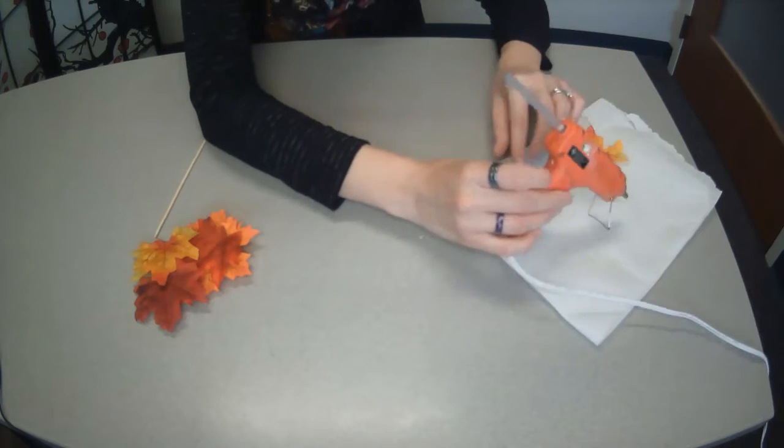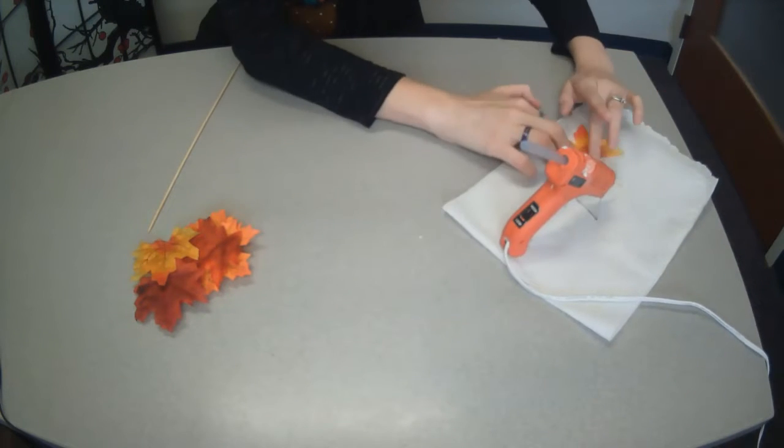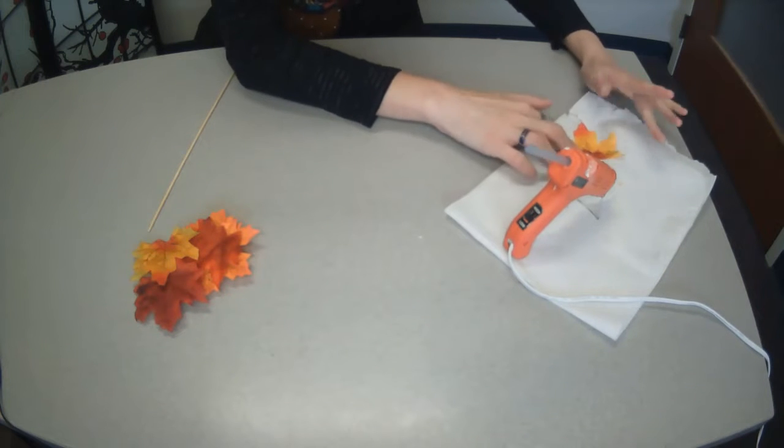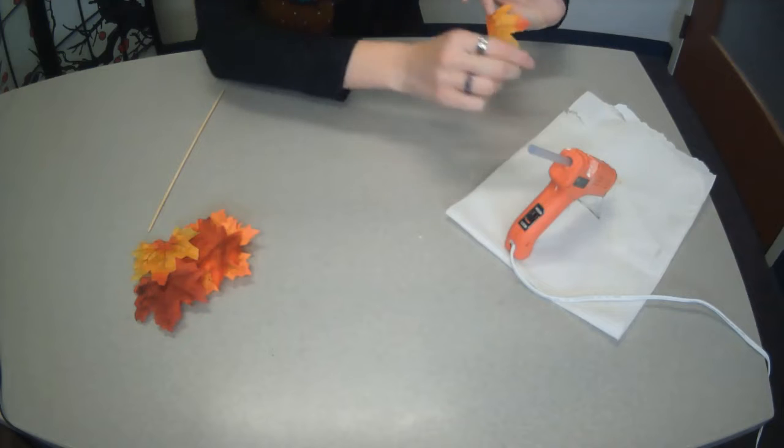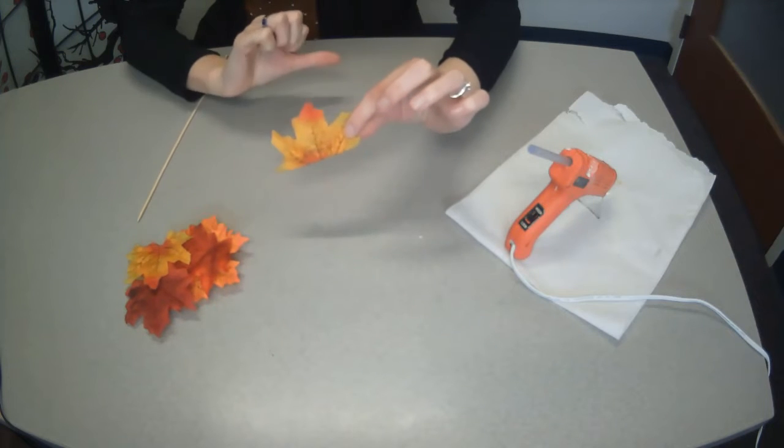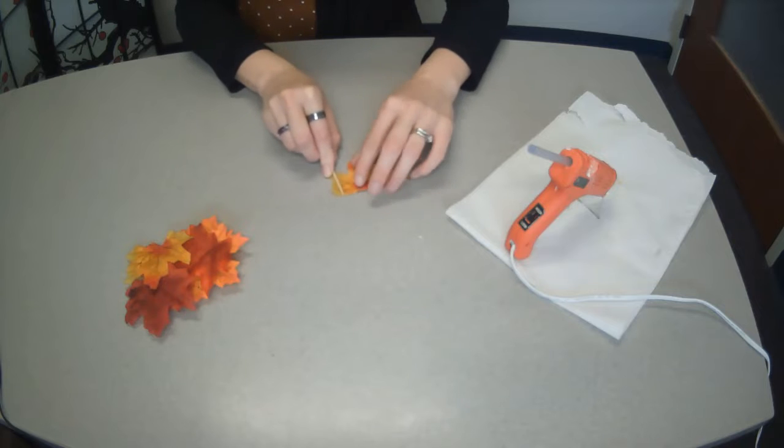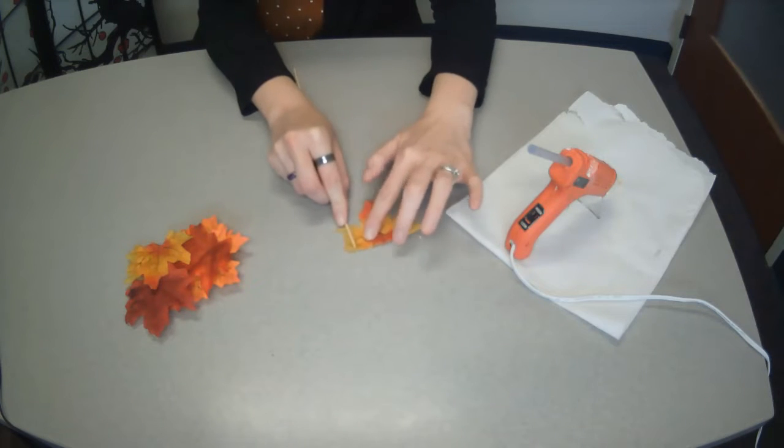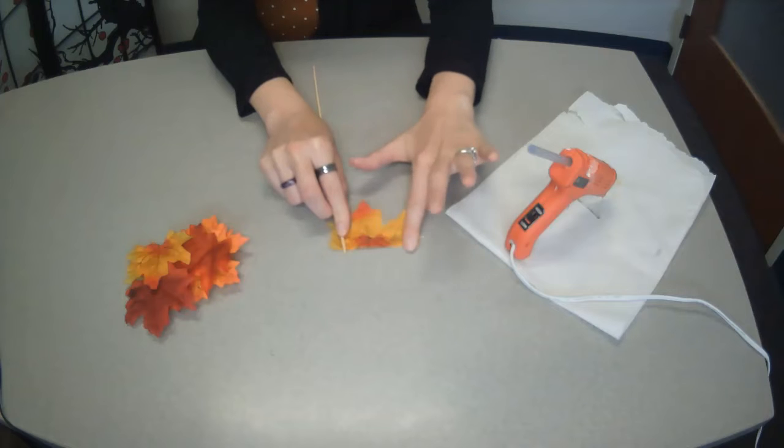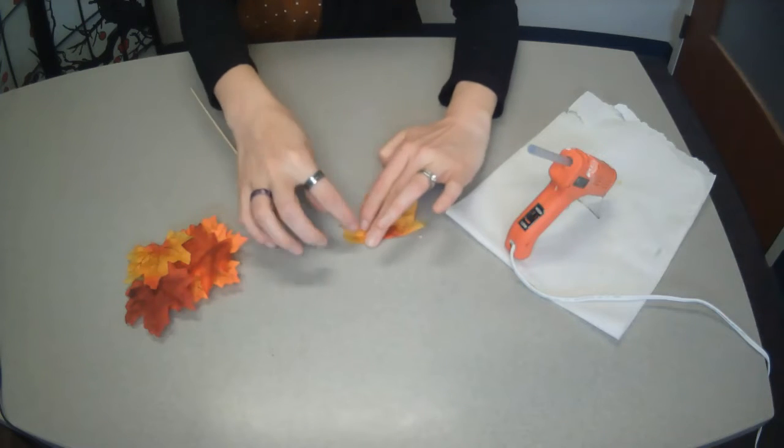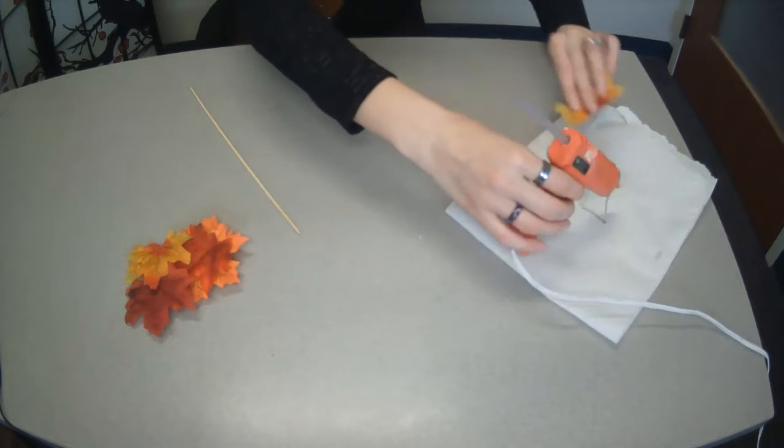Then we're going to fold that over to secure it. So it'll look like that and then we're gonna start rolling it. What we're gonna do is the flat is always on top until you get to the last three. We're gonna put a little bit of glue right here on the edge.